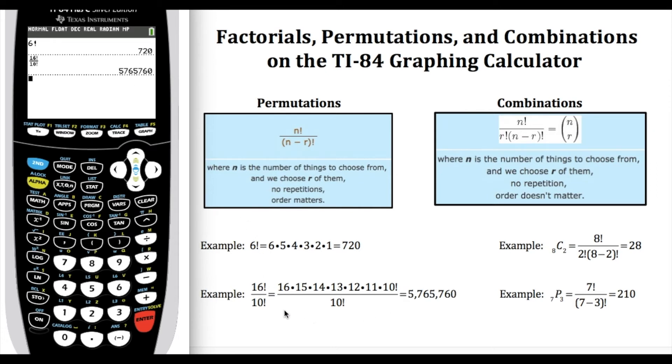If you were working this out by hand you would expand your 16 all the way down to 10 factorial. With that 10 factorial in the denominator we could cross both of those out, so this number comes from multiplying 16 × 15 × 14 × 13 × 12 × 11.